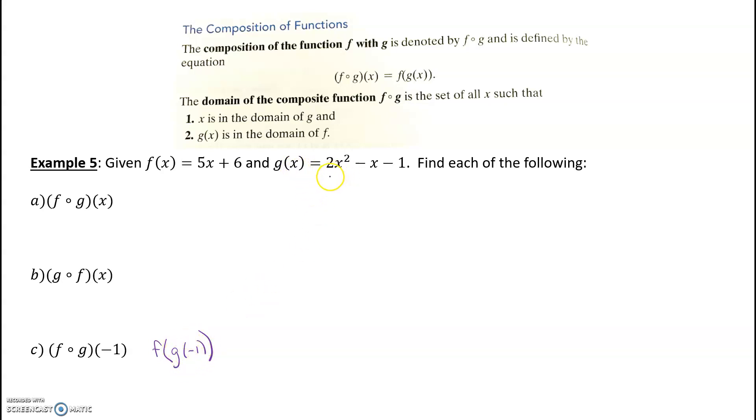So we're going to look at G, we're going to plug in negative 1. 2 times negative 1 squared minus negative 1 minus 1. So negative 1 squared is 1 times 2 is 2. So we've got 2 minus negative becomes plus 1, minus 1, we get 2.